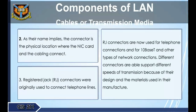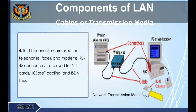The connector is the physical location where the NIC card and the cabling connect. Registered Jack (RJ) connectors were originally used to connect telephone lines and are now used for telephone connections and for 10Base-T and other network connections. Different connectors support different transmission speeds because of their design and materials. RJ11 connectors are used for telephones, faxes, and modems. RJ45 connectors are used for NIC cards, 10Base-T cabling, and ISDN lines.